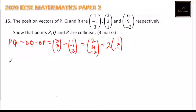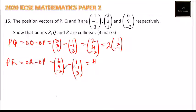Then we go to PR. PR equals OR minus OP, which equals (6, 9, -2) minus (1, -1, 3). I think here we need to correct this. This is 6 minus 1, that will give you 5; 9 minus -1, that will give you positive 10; -2 minus 3, that will give you -5. So we can factor out 5, so here we will be left with (1, 2, -1).